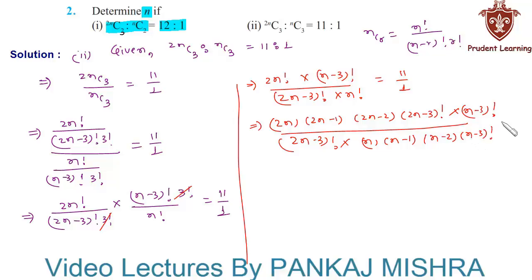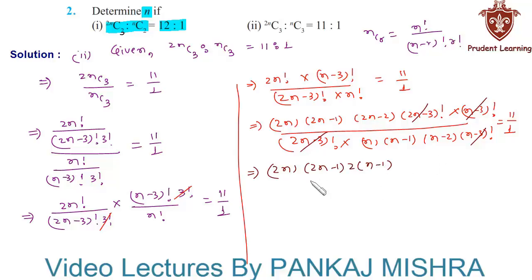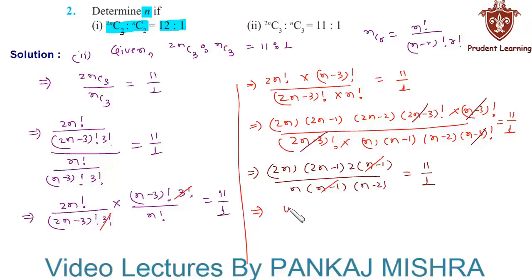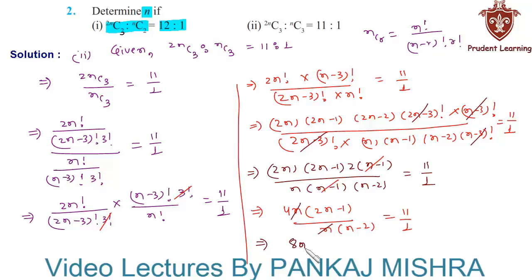And n factorial can be written as n into (n minus 1) into (n minus 2) into (n minus 3) factorial, is equal to 11 upon 1. Here we can cancel (n minus 3) factorial and (2n minus 3) factorial. So we have 2n into (2n minus 1), taking 2 common we have 2 into (n minus 1), over n into (n minus 1) into (n minus 2), is equal to 11 upon 1. Again we can cancel (n minus 1) and n, so we have 4 into (2n minus 1) upon (n minus 2) is equal to 11 upon 1.